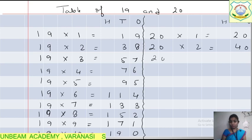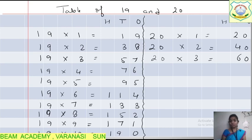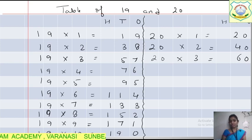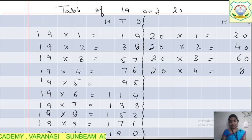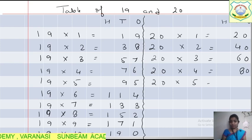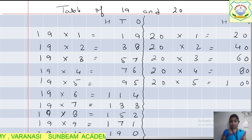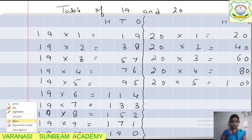Now the table of 20. 20 ones are 20. 20 twos are 40. 20 threes are 60 — simply multiply: 3 zeros are 0, 3 twos are 6, giving 60. 20 fours are 80. 20 fives are 100.